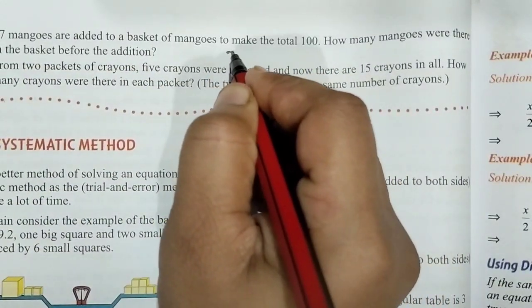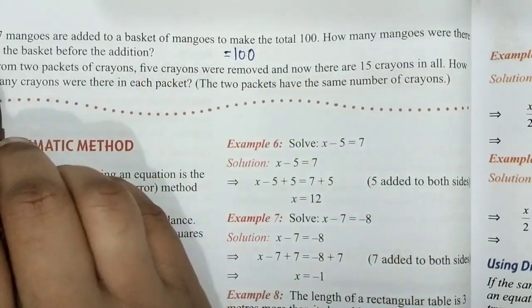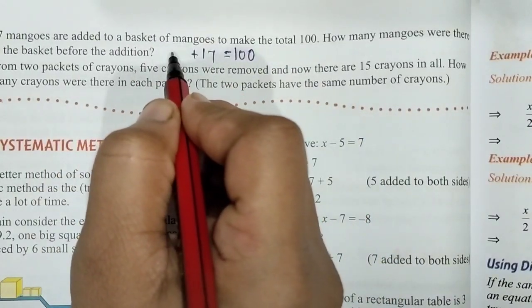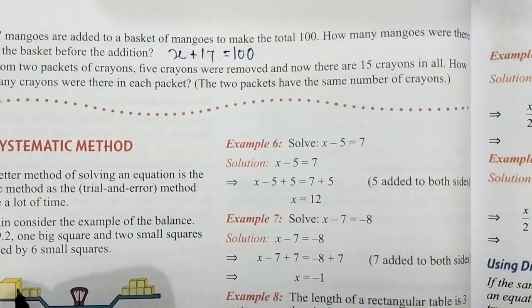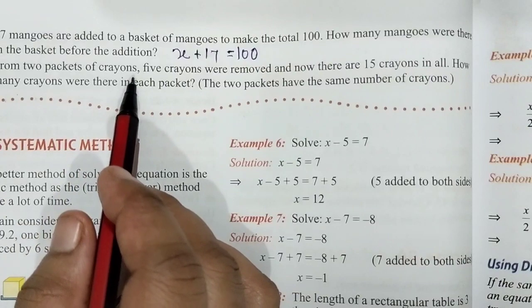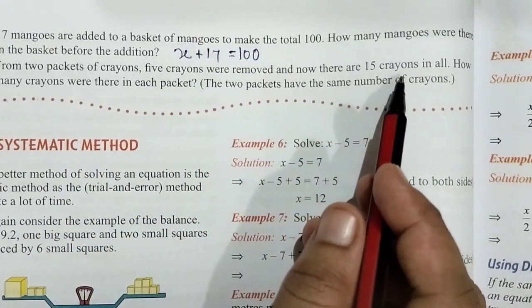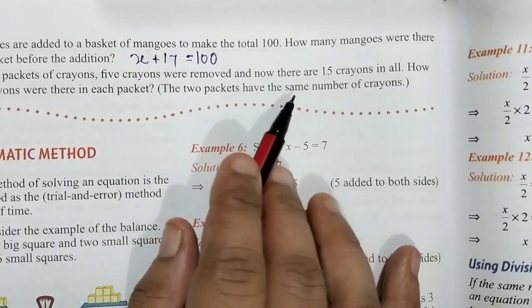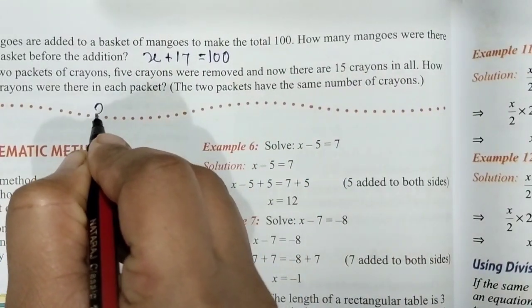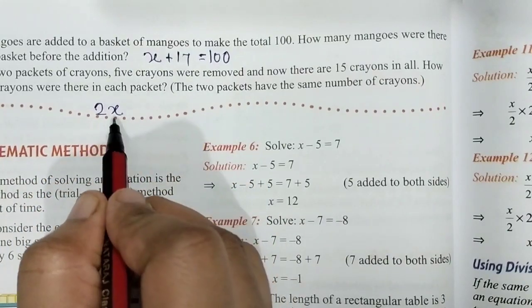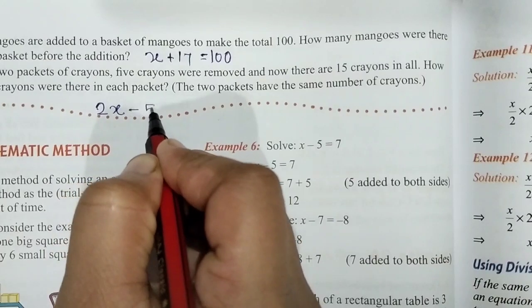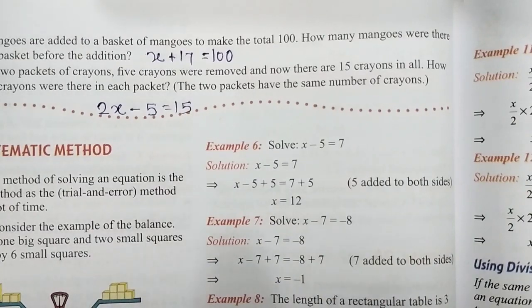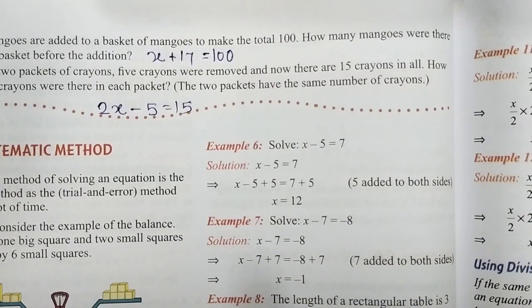The total always goes after the equal sign, so equals 100. 17 mangoes are added, so plus 17, and the unknown original quantity is x. Equation: x plus 17 equals 100. Part c: From 2 packets of crayons, 5 crayons were removed and now there are 15 crayons in all. How many crayons were there in each packet? Both packets have the same number, so we consider 2x minus 5 equals 15. To write a good equation, read the question carefully.